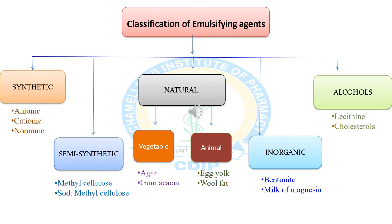The next class is inorganic emulsifying agents. Several inorganic substances such as magnesium oxide, milk of magnesia, and bentonites are used as emulsifying agents in the formulation of emulsion. The last class is alcohol-based emulsifiers.